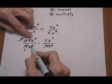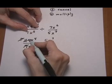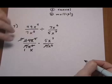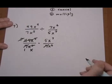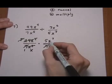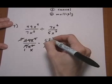And then for the x's here, we have x⁴ and x⁵, so let's divide by x⁴ top and bottom. This leaves us 1 on top and just an x from the x⁵. Then we have x⁷ and x⁶. If we cancel out the x⁶,